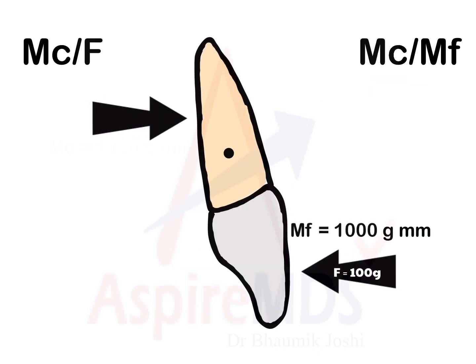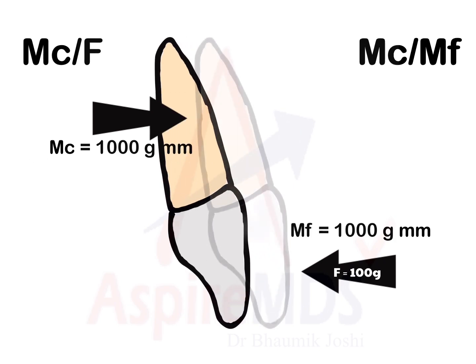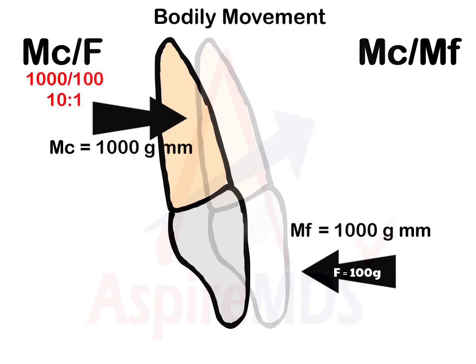If we introduce a counterclockwise moment of couple of 1000 gram-millimeters — exactly equal to the moment of force — this cancels out the tipping movement and the tooth translates bodily, with the center of rotation at infinity. Here, moment of force is 1000 gram-millimeters and moment of couple is also 1000 gram-millimeters. Hence, the moment to force ratio is 10:1 and the moment of couple to moment of force ratio is 1. This type of bodily movement is required when retracting a canine into the extraction site.